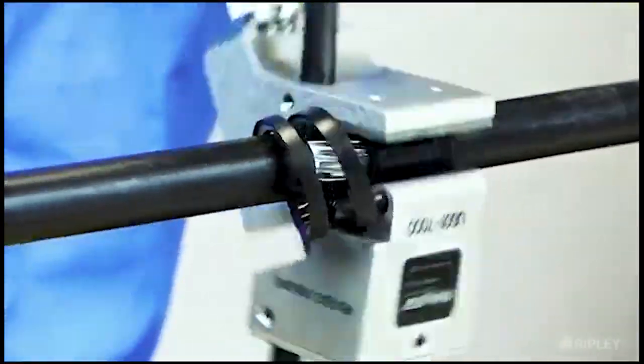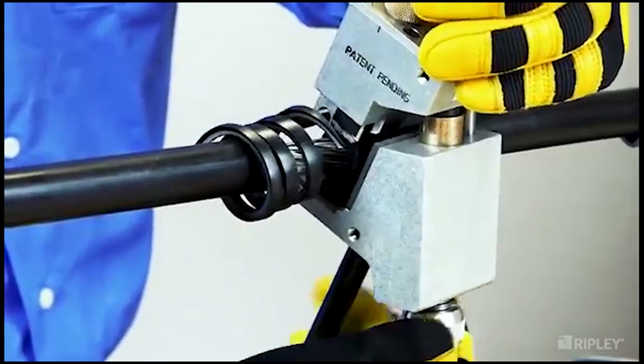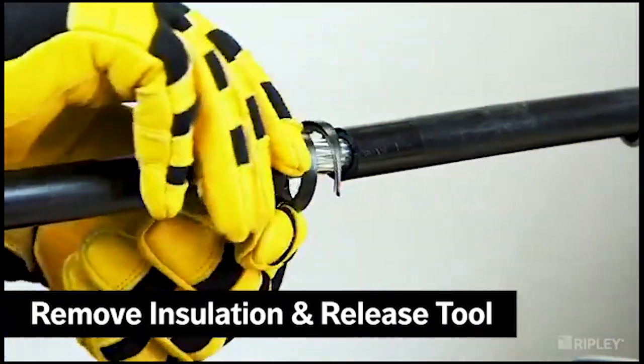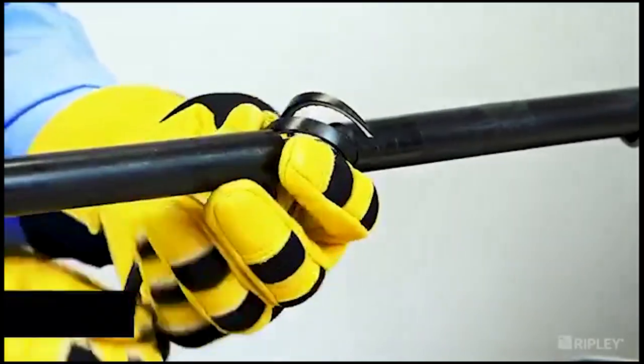Continue to rotate the tool until the stripping length has been achieved. Then release the tool from the cable and remove the insulation chip to complete the mid-span stripping operation.